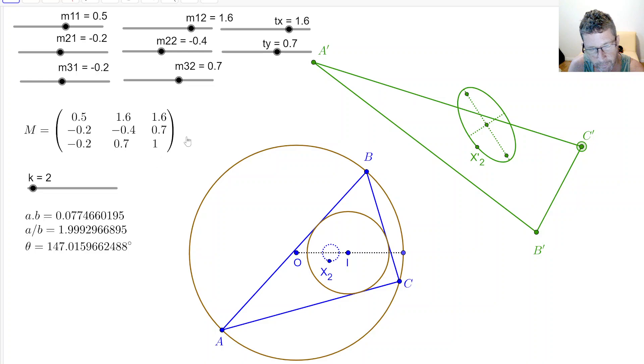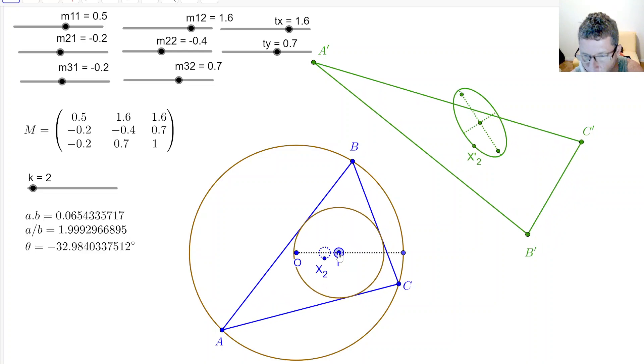I can set the parameters here. So I got eight parameters, and then A prime, B prime, C prime is the image of ABC. Now, what I noticed was that under this, well, let me say one more thing.